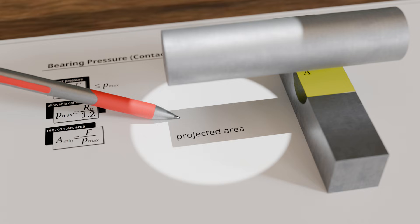In this case, the projected area is therefore a rectangular area with the width D corresponding to the diameter of the pin and the length L of the contact surface.